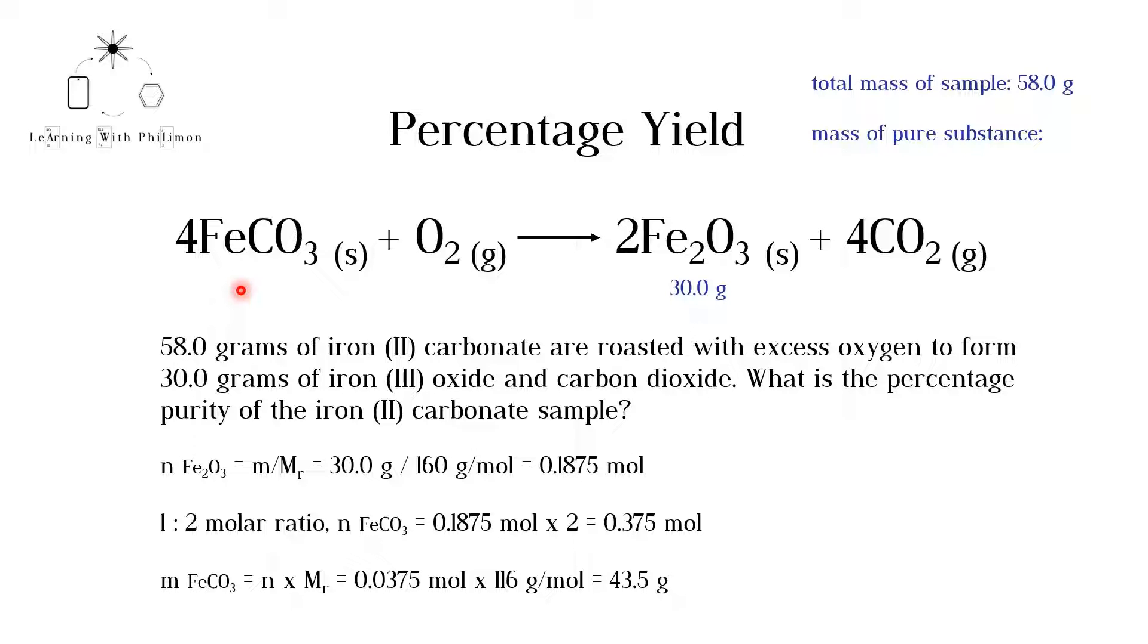As always in stoichiometry questions, we start by calculating the number of moles by dividing the mass by the molar mass. 0.1875 moles of iron III oxide are formed.